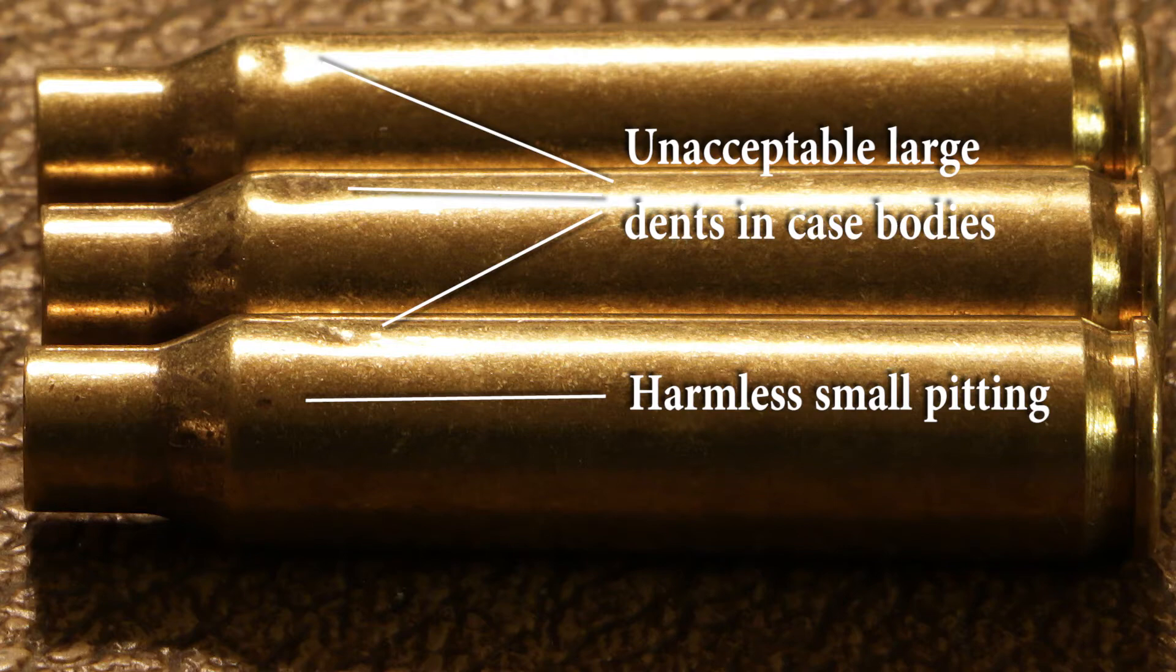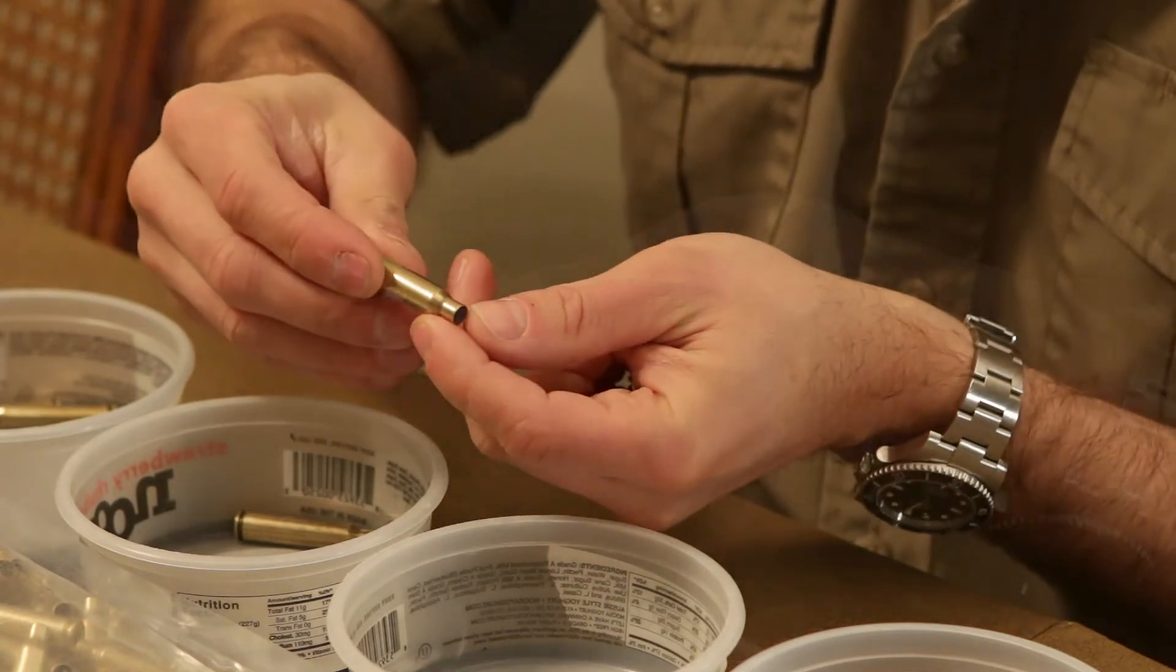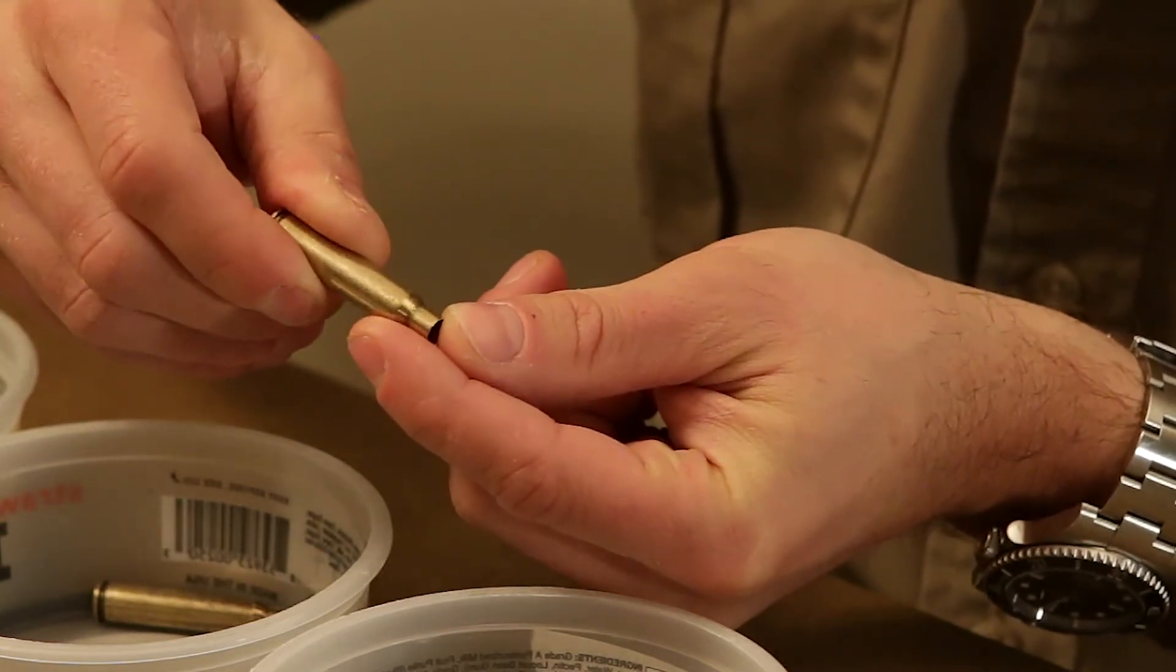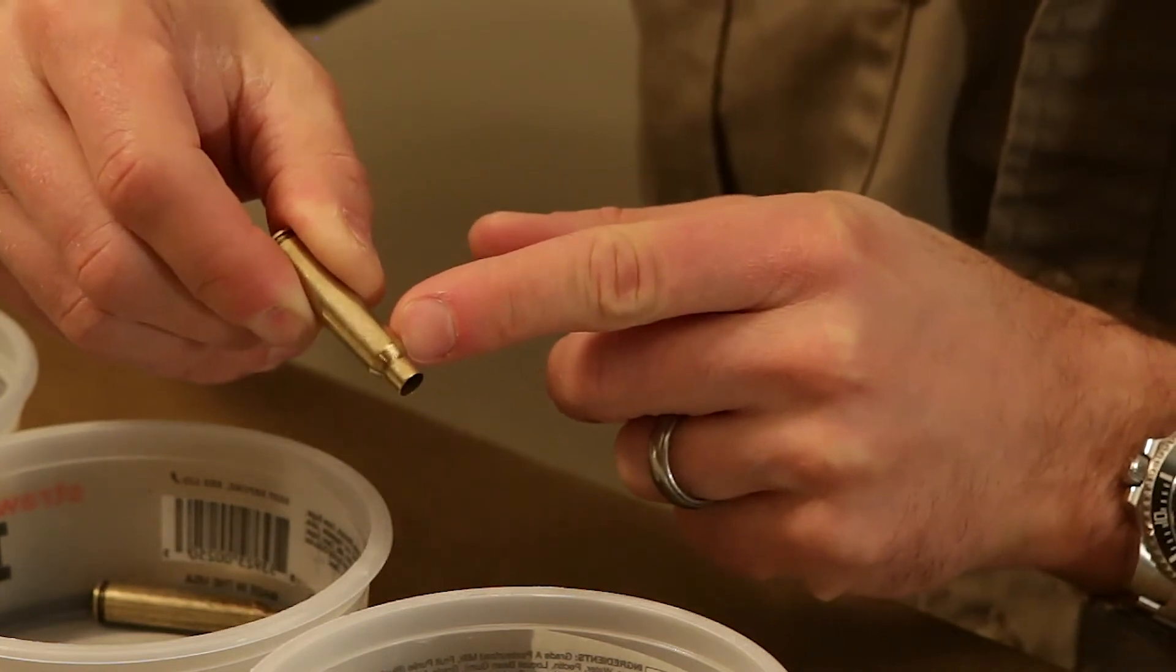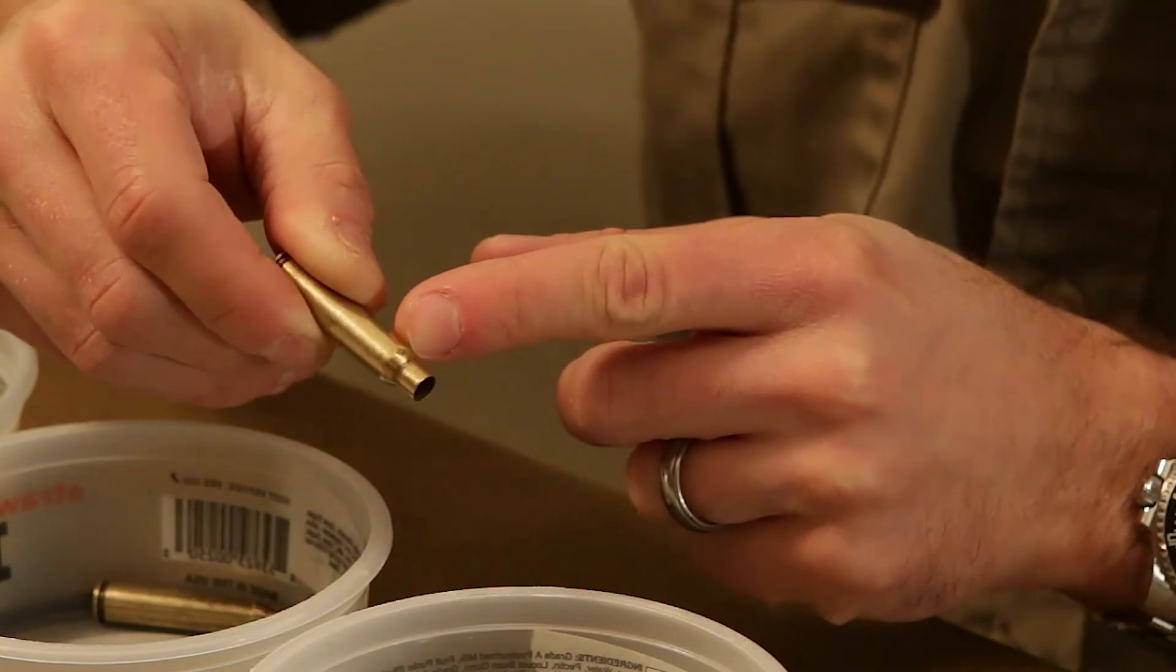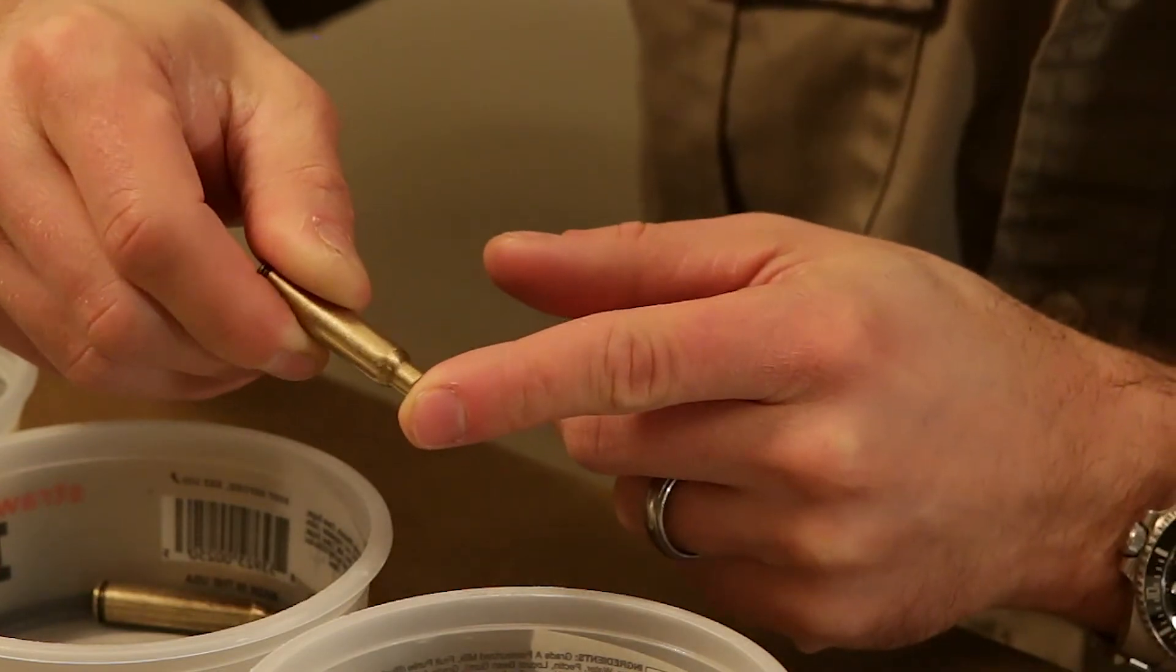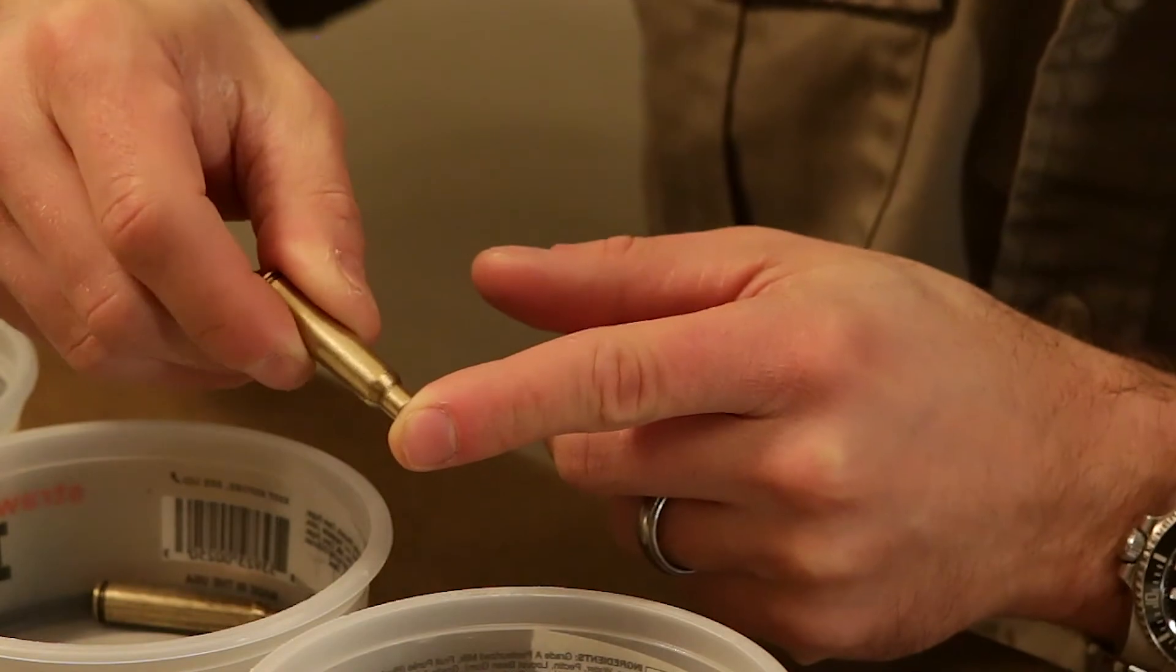Let's do another one here. This is a Lake City 2010. So again, you hold your finger along the case mouth and rotate it. Now I can see that this one has a pretty good dent right on the edge of the shoulder. So that's one we would want to put in the second category. This isn't too bad. It would probably press out when we do our full-length sizing, but not completely. So we're going to set that aside as a second quality. It's safe to shoot, but it won't be a precision case.